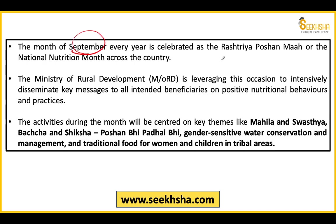Every year September is celebrated as Rashtriya Poshan Maah, also known as National Nutrition Month. The Ministry of Rural Development uses this occasion to encourage many beneficiaries to adopt positive nutrition behaviors. The activities this year were centered on Mahila aur Swasthya (women and health), children and education, nutrition studies, gender-sensitive water conservation management, and traditional food for women and children in tribal areas. These were the main themes of Rashtriya Poshan Maah this year.